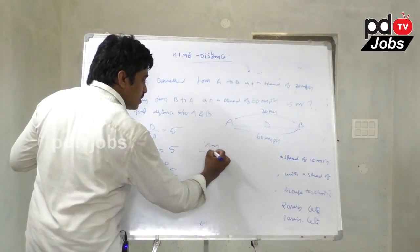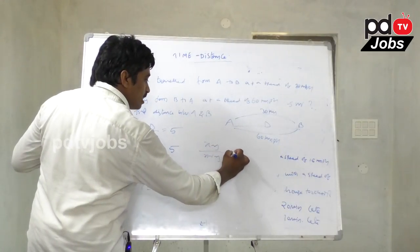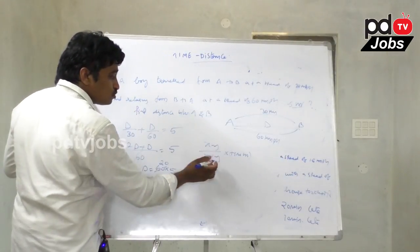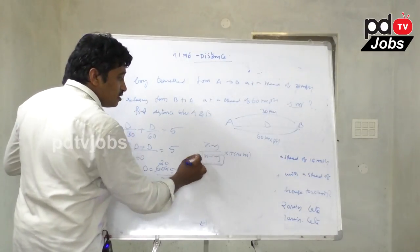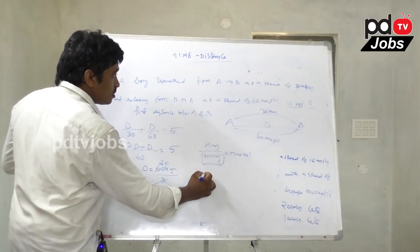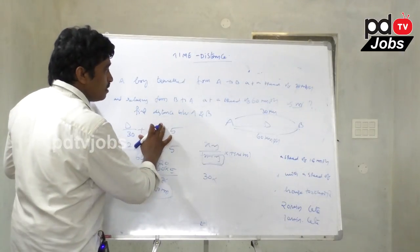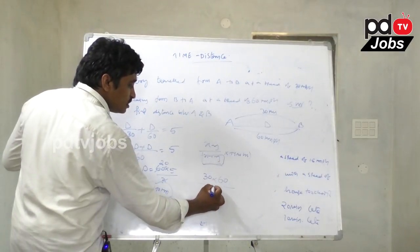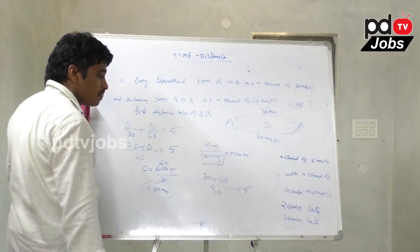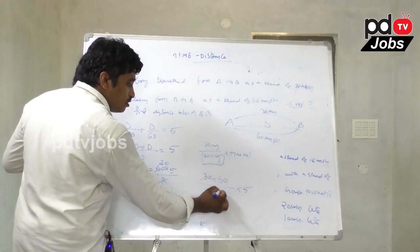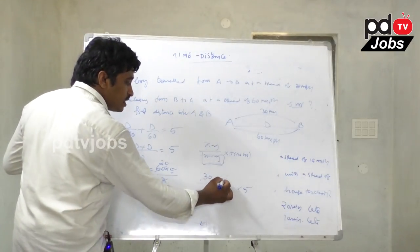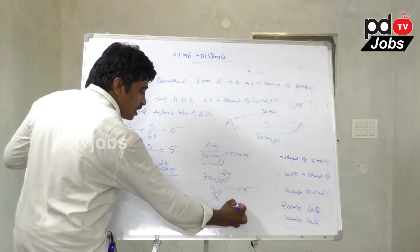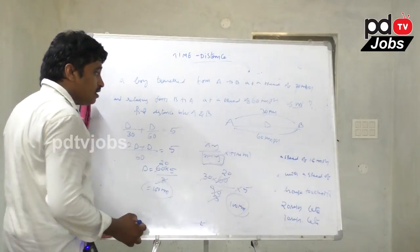This can also be solved using the formula: distance = X × Y divided by (X plus Y) times total time in hours. Since total time is given, we add in the denominator. Here X = 30, Y = 60, so 30 × 60 divided by (30 + 60) = 1800/90 = 20, times 5 hours = 100 km.